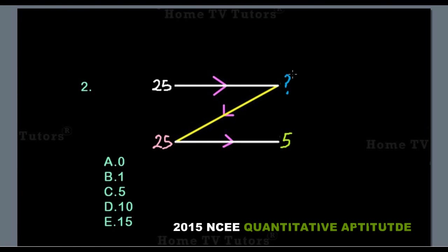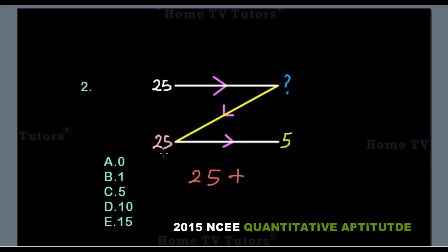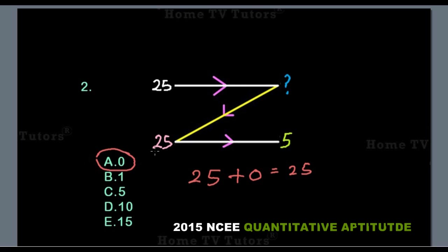Now let's find the missing number at the top right. Remember, the summation of the two numbers at the top is what slides down to give us the number at the bottom left. So 25 plus what will give us 25? Obviously, 0. So the answer option A is the right answer.